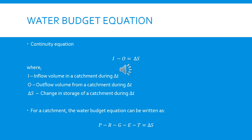For a catchment area, we need to calculate a water budget equation, which is essentially the continuity equation. As we are familiar from fluid mechanics: inflow minus outflow equals storage. In this equation, I represents inflow volume in a catchment during Δt, O is outflow volume from the catchment during Δt, and ΔS is the change in storage.